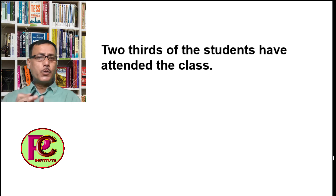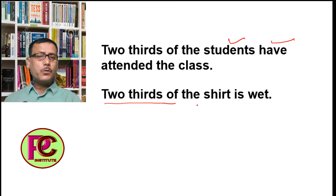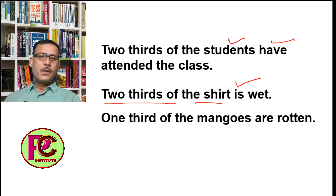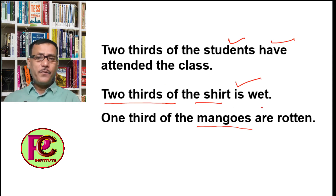Some more examples: 'Two thirds of the students...' — plural noun, so plural verb. 'Two thirds of the shirt is wet' — two thirds of the shirt is wet. Here 'two thirds of' is correct, but there is only one shirt, so the subject is singular, and hence the verb is also singular. 'One third of the mangoes are rotten' — there are many mangoes, so one third of them is also plural, hence the verb is plural.